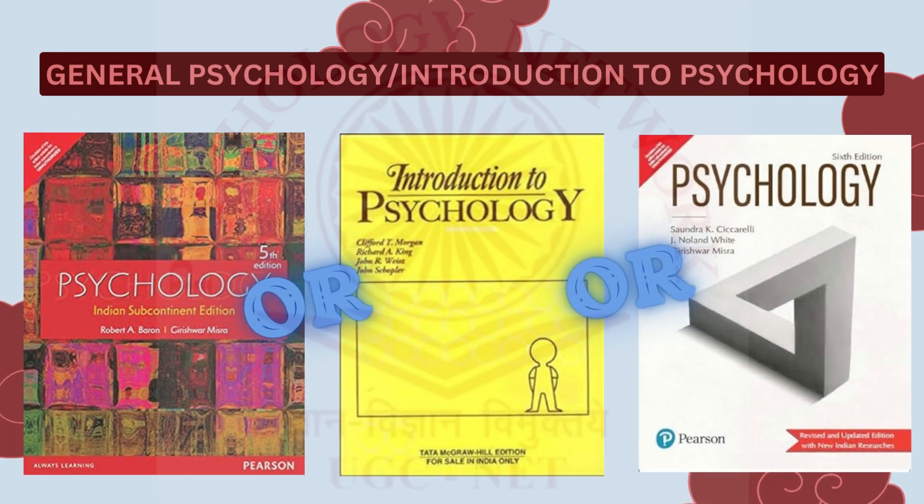Baron and Morgan & King are the first two books that are a must. Some topics are very well covered in Morgan & King, and this book also has topics that Baron doesn't. Ciccarelli is essentially a copy of Baron. If you can, buy both Morgan & King and Baron, but if you want to buy only one book, then Morgan & King would be my choice.